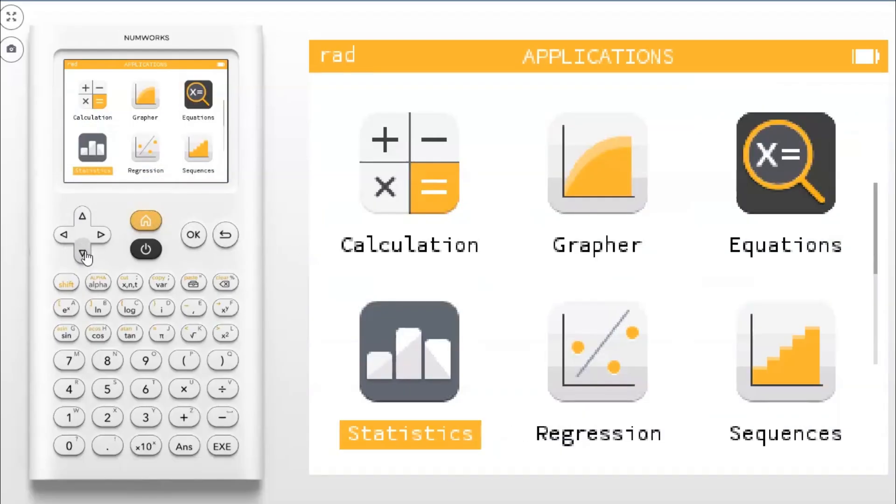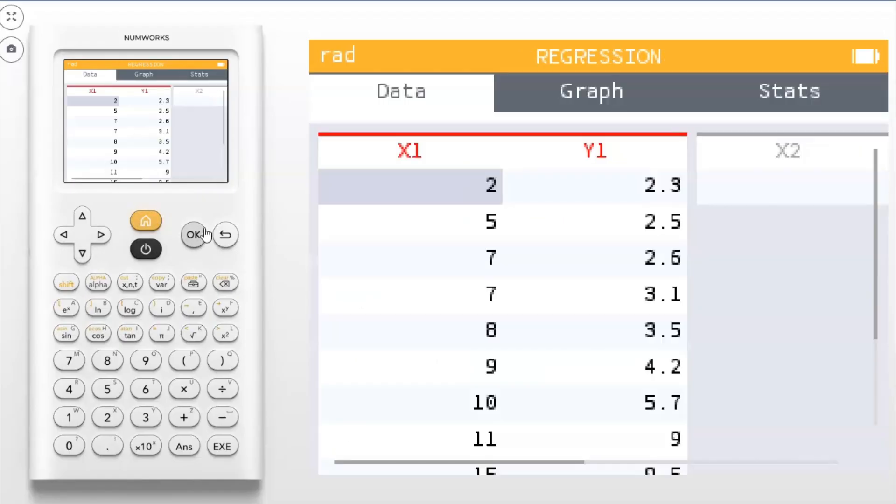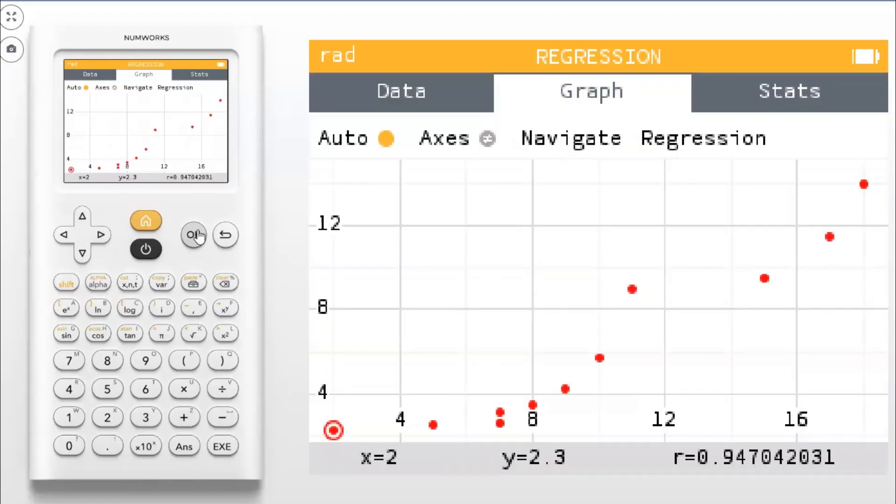All right, we also have a cool app here for regression analysis. This is going to be unit two of AP Statistics. So you have some data points, right? So you have X's and Y values, inputs and outputs, explanatory and response variables. So I have some data entered in here. These are just data points. So the first thing you want to do here is go to the graph. Then you can actually look at your data. So it looks maybe somewhat linear, but here's some really cool things. It zooms in on it automatically, right?